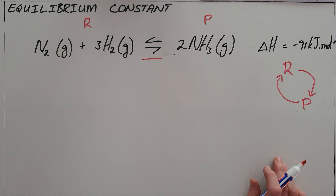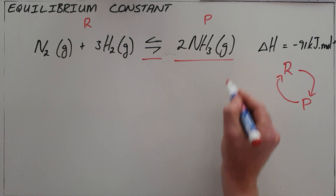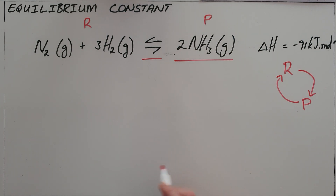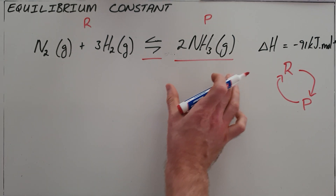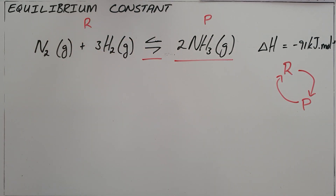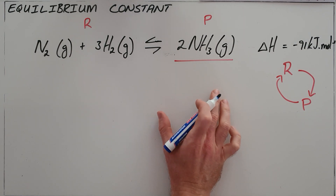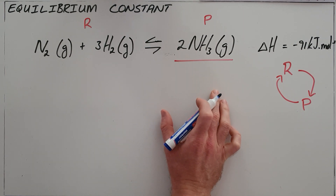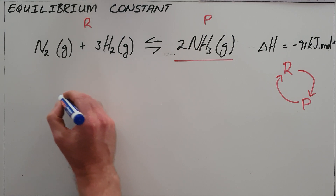Now what becomes important, especially in the fertilizer industry where the goal is to produce ammonia, is for us to be able to know that at equilibrium how much of each element is present. And the way that we do that is with a constant known as the equilibrium constant, also known as Kc.